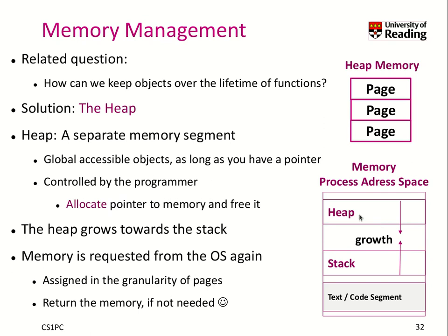You have to remember to store a pointer to those objects. The heap is fully under the control of the programmer. What you need to do is allocate memory on this heap, which gives you a pointer to that memory. You are in charge of freeing the memory when you no longer need it. The memory is requested from the operating system, so pages on main memory get mapped into the heap memory as needed.